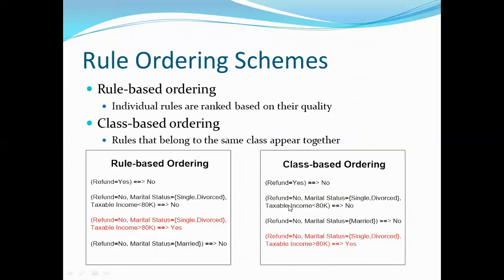In rule ordering, individual rules are ranked based on their quality. Quality can be measured by accuracy, coverage, size, or advice from domain experts. Based on quality, individual rules are ordered.